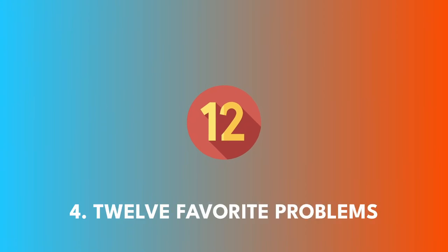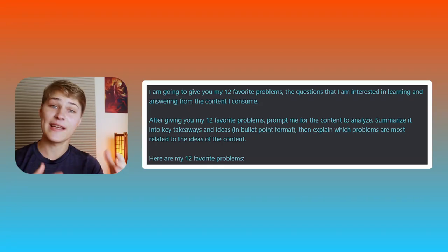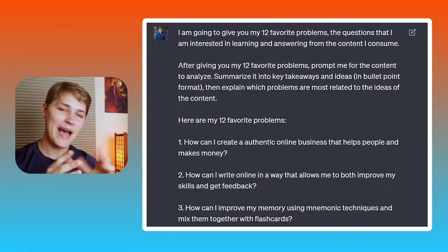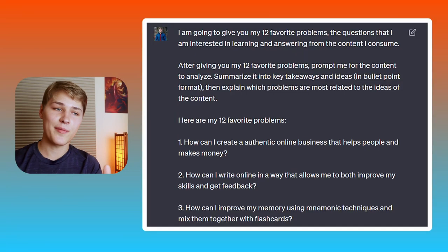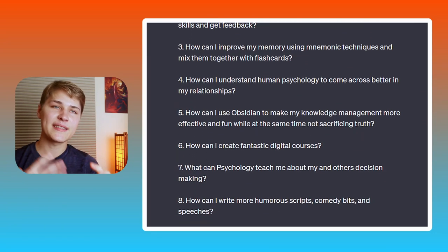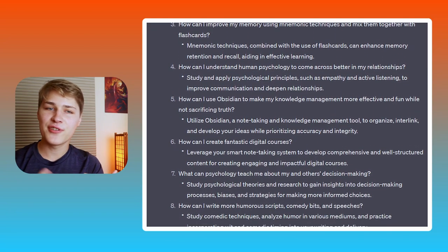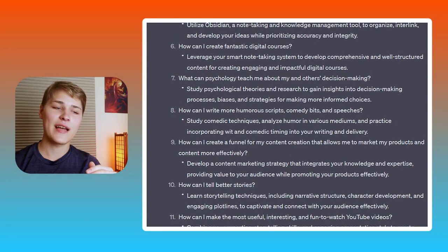Prompt 4 is 12 Favorite Problems. This prompt is great for finding information relevant to you in a text. The 12 Favorite Problems is an idea first came up with by Richard Feynman, Nobel Prize-winning physicist, who was known to run everything through 12 favorite problems each day. By asking ChatGPT to distill information based on those problems, you can see what's specifically relevant to you. I did it with the book How to Take Smart Notes — but imagine doing this with book highlights, articles, or anything.